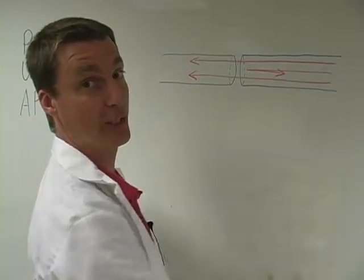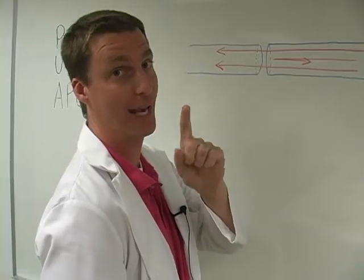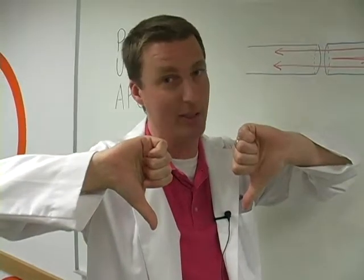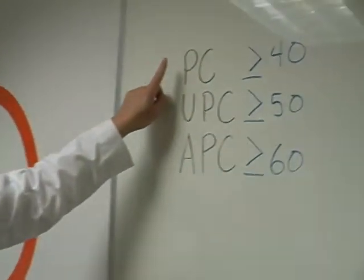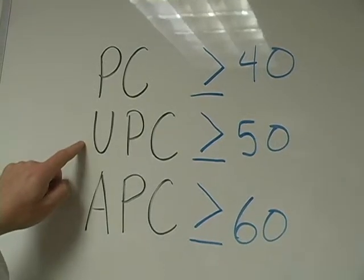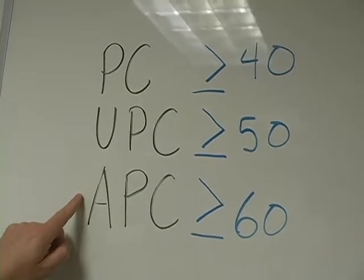Too much of this can shorten the life of the transceiver and that can lead to down time. Nobody wants that. So back reflection is measured in dB, and as I've written down here, PC is 40 or better, UPC is 50 or better, and APC is 60 or better.